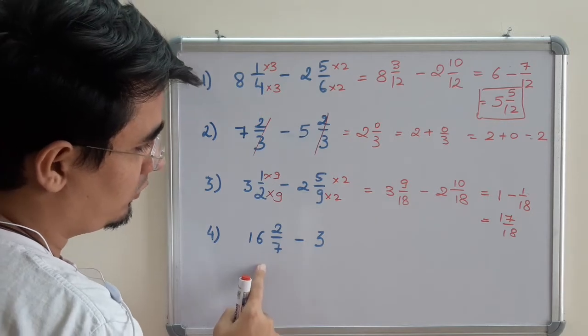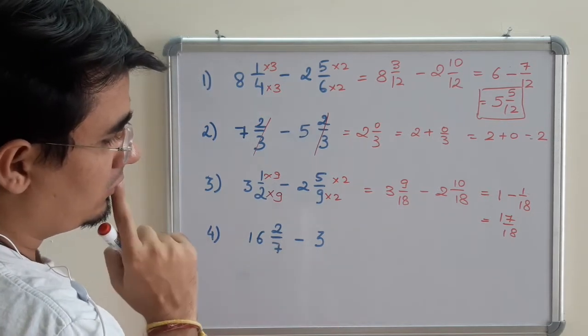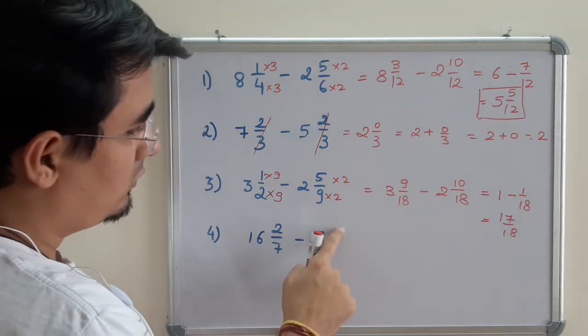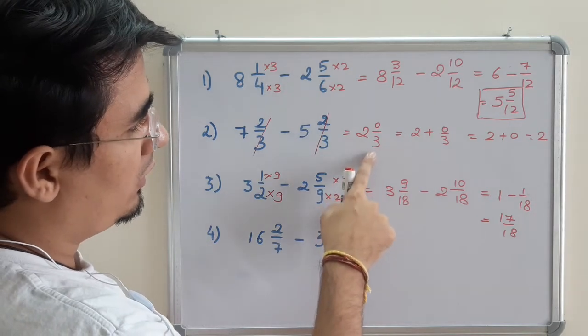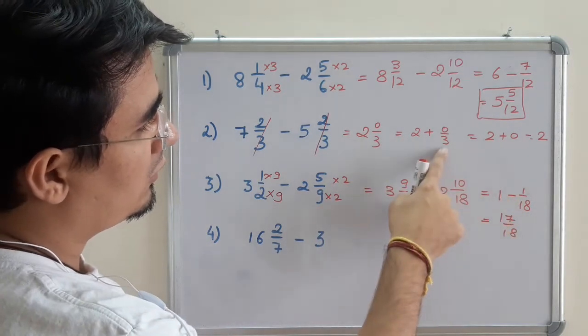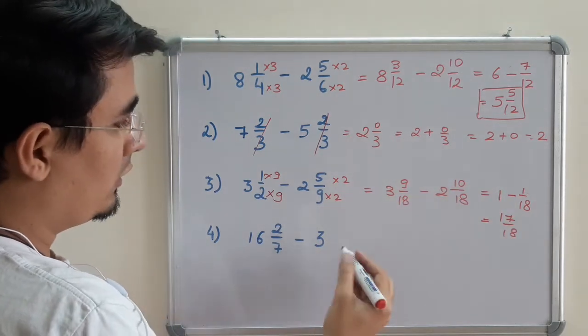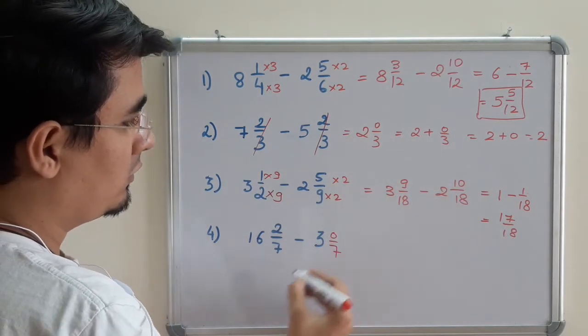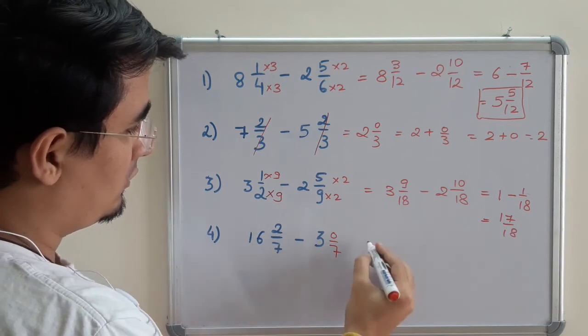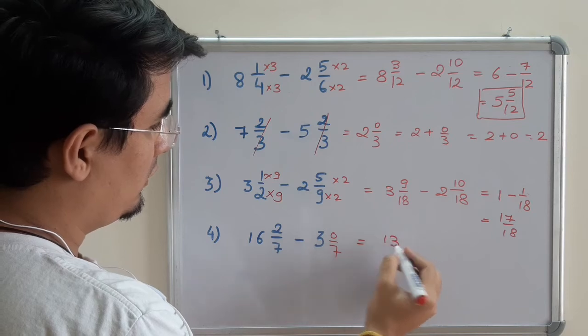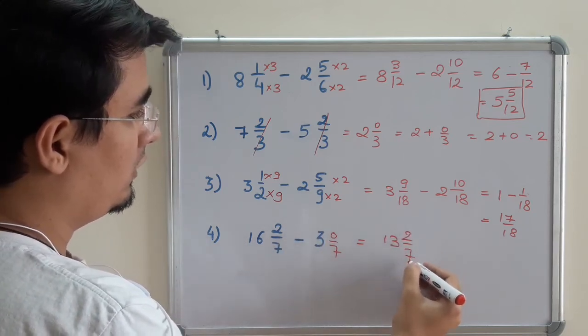Now moving on to the next question: 16 2/7 minus 3. This thing is different - it doesn't have any fraction. So as we got to know, if this is 0, I can write it with any denominator and it will still be 0. So I can write it as 0 upon 7. Are you getting my point? So 16 minus 3 is 13, and 2 minus 0 is 2/7. That easy.